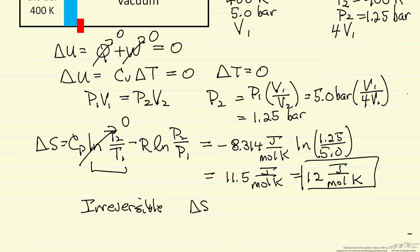Delta S total, system plus surroundings, must be greater than zero. Delta S surroundings is zero because Q is zero, so there is no heat transfer, there is no interaction with the surroundings. Delta S for the system, this is delta S for the gas, that is the system, that is positive. So overall, delta S is positive, as we expect for an irreversible process.